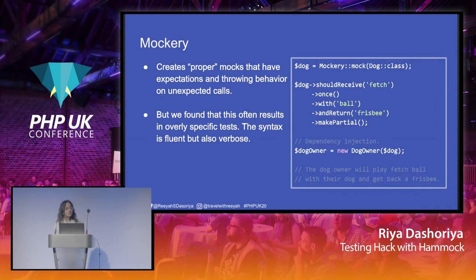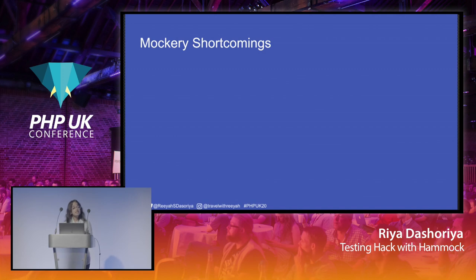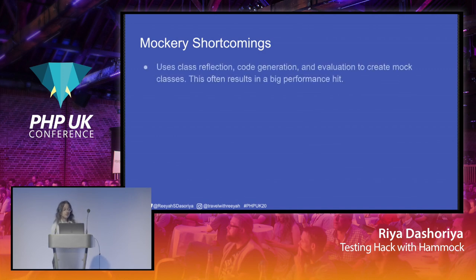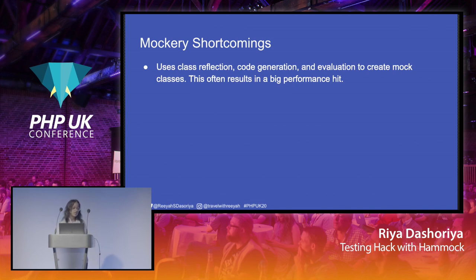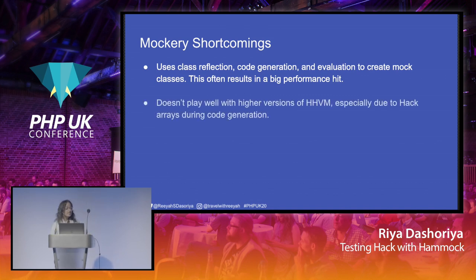We found that Mockery often results in overly specific tests. The syntax is fluent but also verbose. Mockery uses class reflection, code generation, and evaluation to create mock classes, which hurts the performance of our tests very badly. It also doesn't work well with higher versions of HHVM. If you are on Hacklang you need to upgrade HHVM versions regularly, and Mockery is not very great for that.